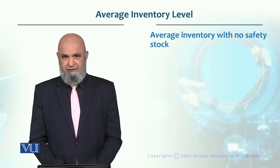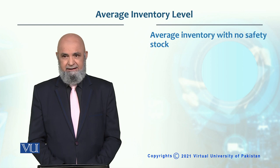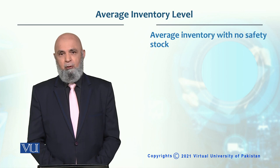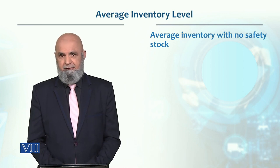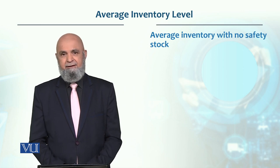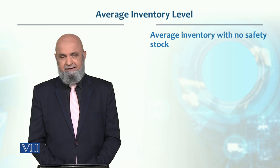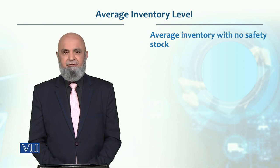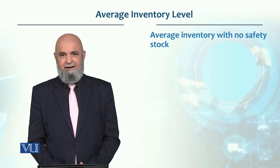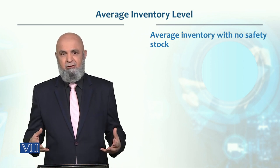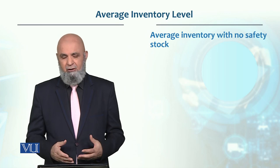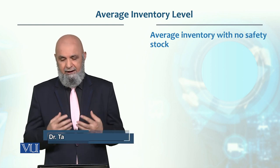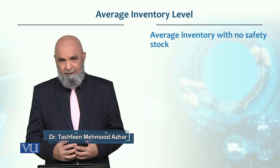Average inventory with no safety stock. We have done reorder point with uncertain demand and with certain demand. When there is certain demand, when we know that demand is certain, we don't have to keep the safety stock. If we determine the average inventory level, we don't have to keep the safety stock.